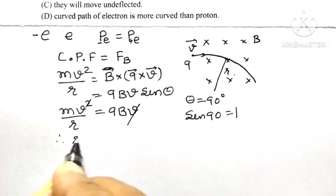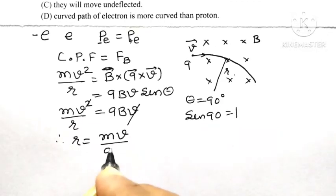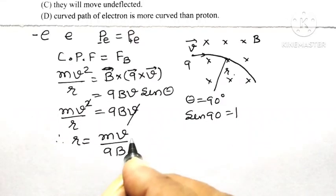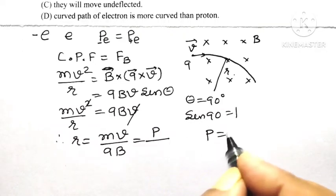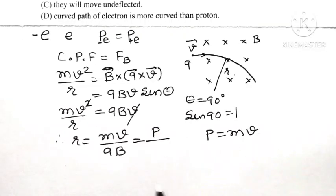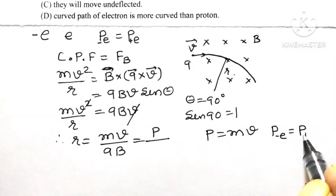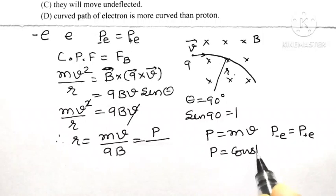Cancelling one V, the radius of the circular path R equals Mv divided by QB. But Mv equals momentum P, so R equals P divided by QB. We were given that both the electron and proton have the same momenta, so P is constant for both.